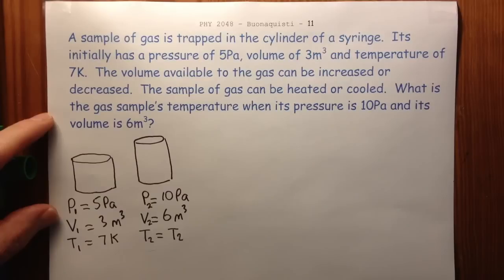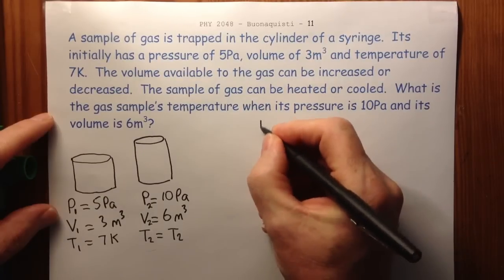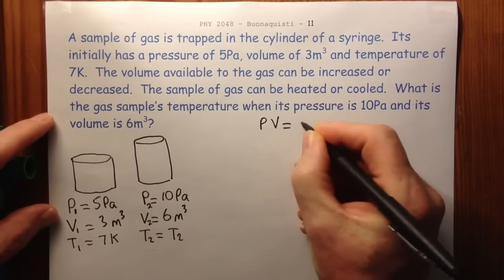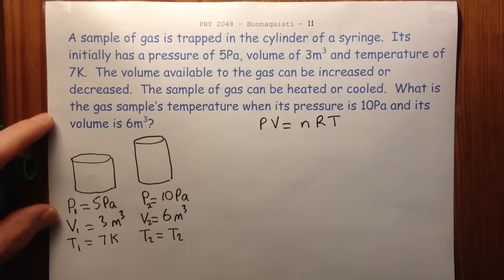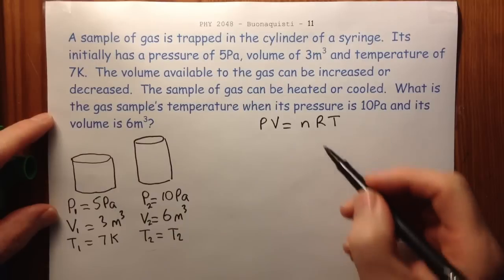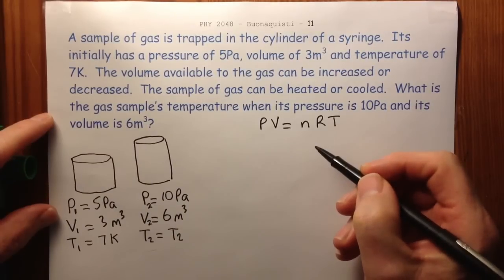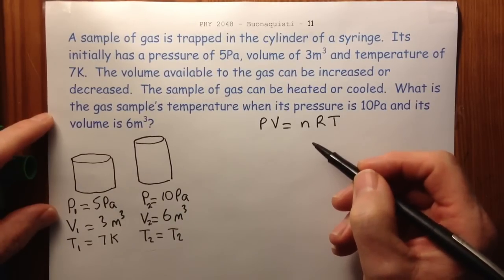And the relationship that links these is that PV equals nRT. Where P is the pressure, V is the volume, n is the number of moles of gas, that's the amount of gas.